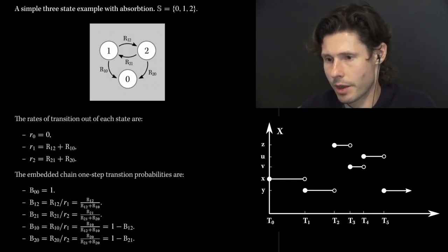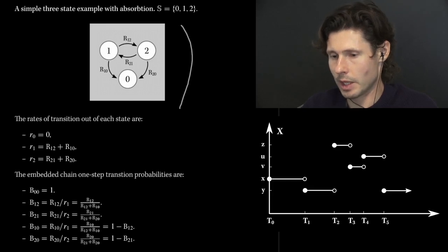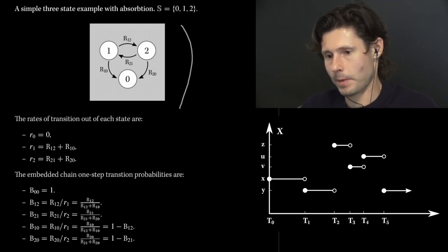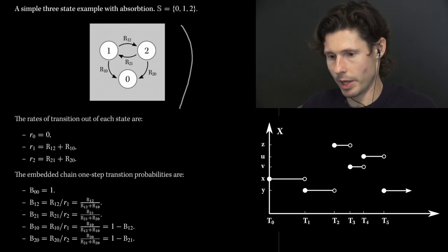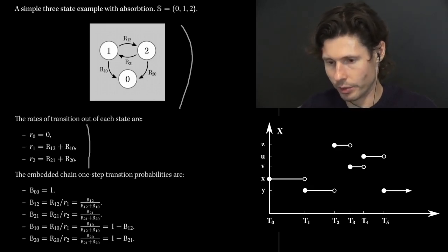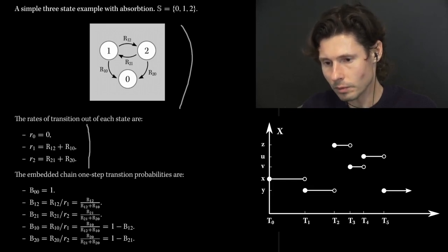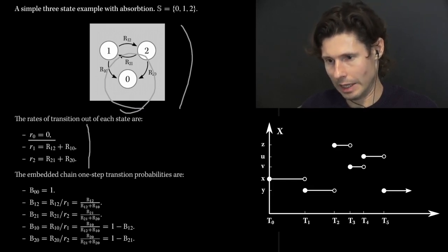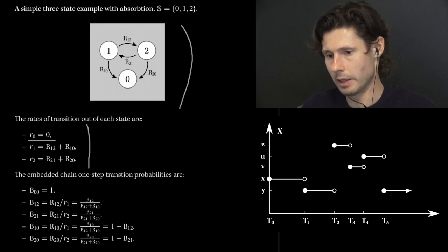Let's look at another example: a three-state example with states 0, 1, and 2. Here's the transition rate diagram — it immediately tells you the states, and the arrows indicate the entries of our generator. We can immediately go from this description to the generator, and then discuss the transition rates and embedded chain probabilities. The transition rate out of state 0, R0, equals 0, because you see no arrows leaving state 0. This is what would be called an absorbing state — once the chain enters 0, it stays there forever.